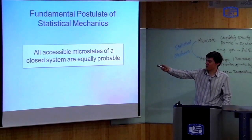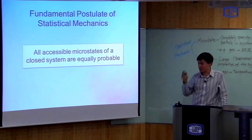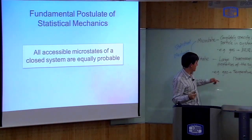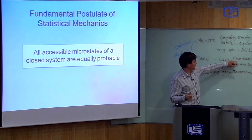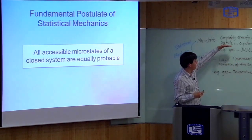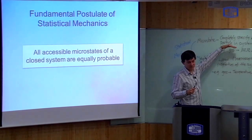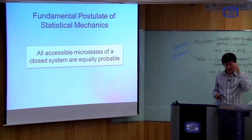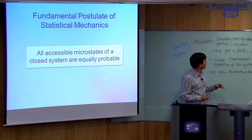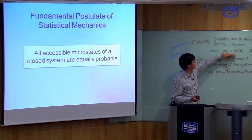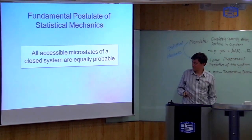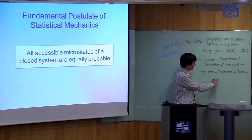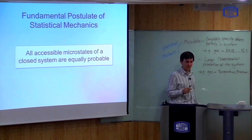As you can probably guess from the name, this is called the fundamental postulate. This is the most important idea in order to be able to derive the large-scale properties of a system from its microstate. What we're going to do for the rest of this class is look at some simple examples of systems where we characterize the full microstate, and then use this fundamental postulate to show what the large-scale properties may look like. This is the goal of the rest of the course.